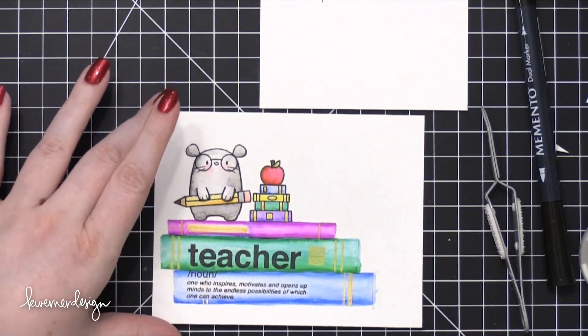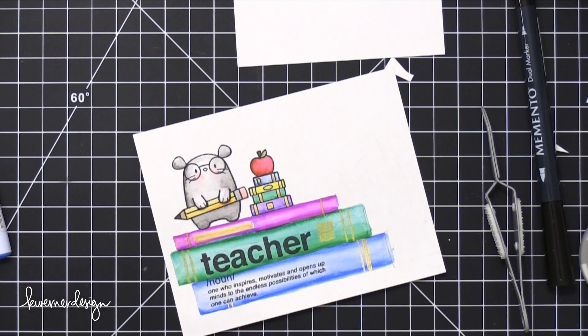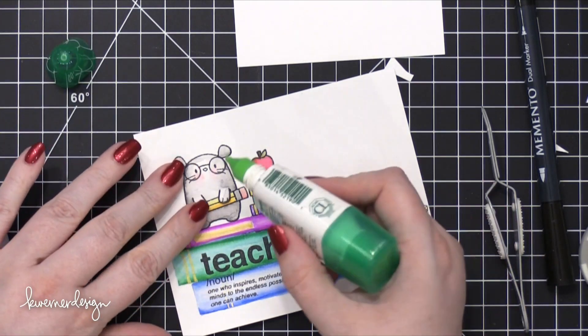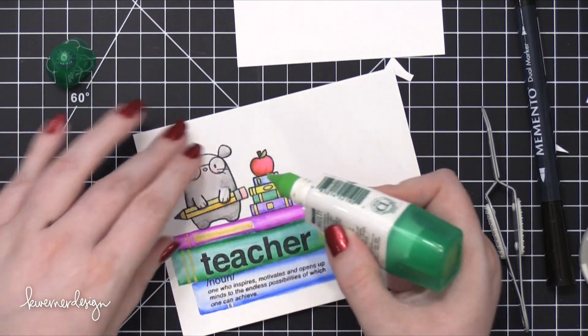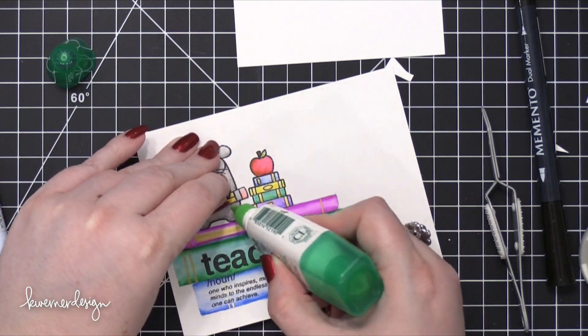And then I put a little bit of that same glue underneath the arms on the mouse because they were sticking up a little bit and I was afraid that that might catch on the envelope for the card or some other things, so I decided to go ahead and glue that down.